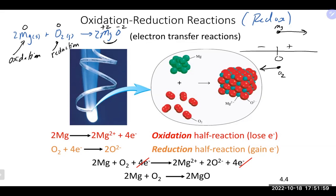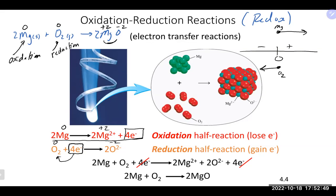Breaking this reaction into half reactions: the oxidation half reaction shows magnesium going from 0 to +2, with electrons released on the product side. The reduction half reaction shows oxygen gaining those electrons. Why are there four electrons total? There are two magnesiums, each losing two electrons — two times two equals four. In the balanced half reaction, each magnesium gives up two electrons for a grand total of four electrons.